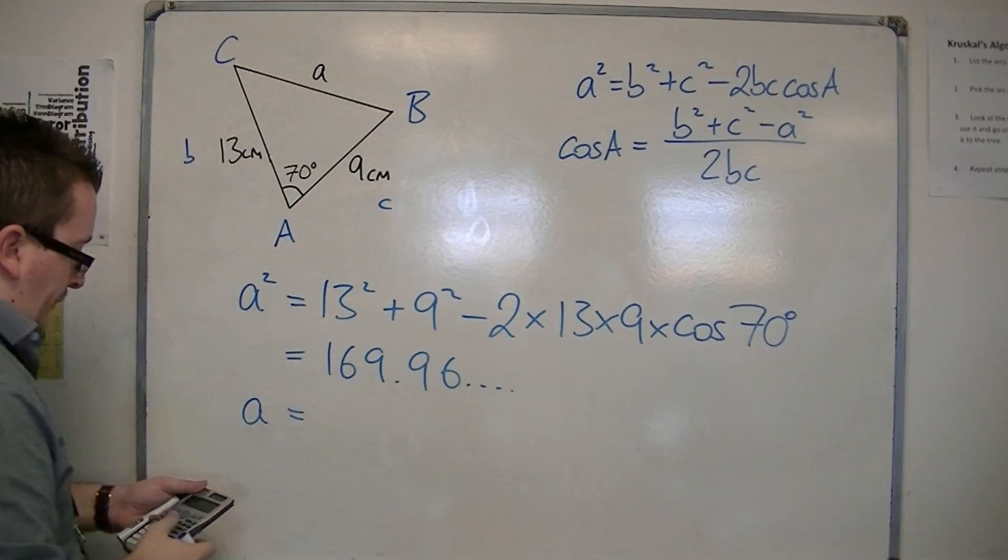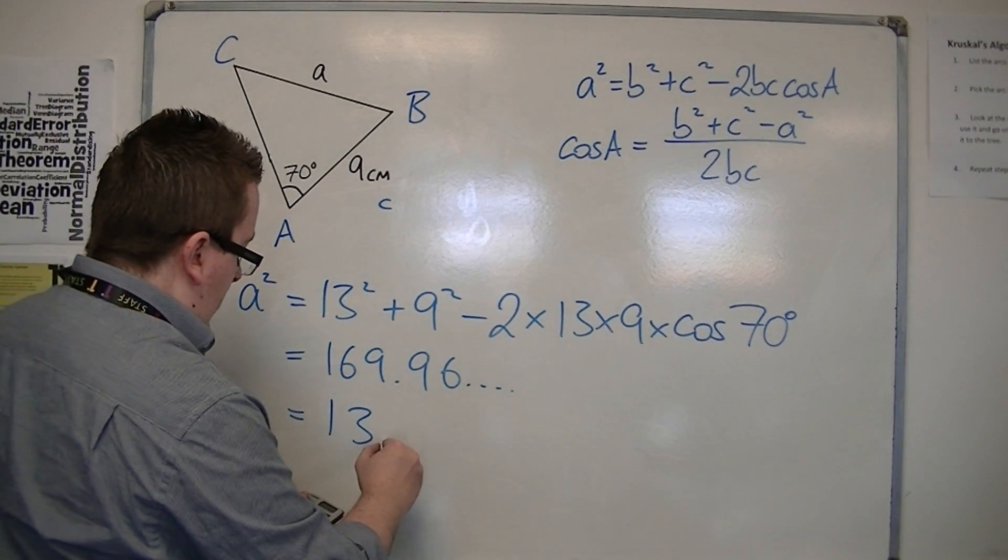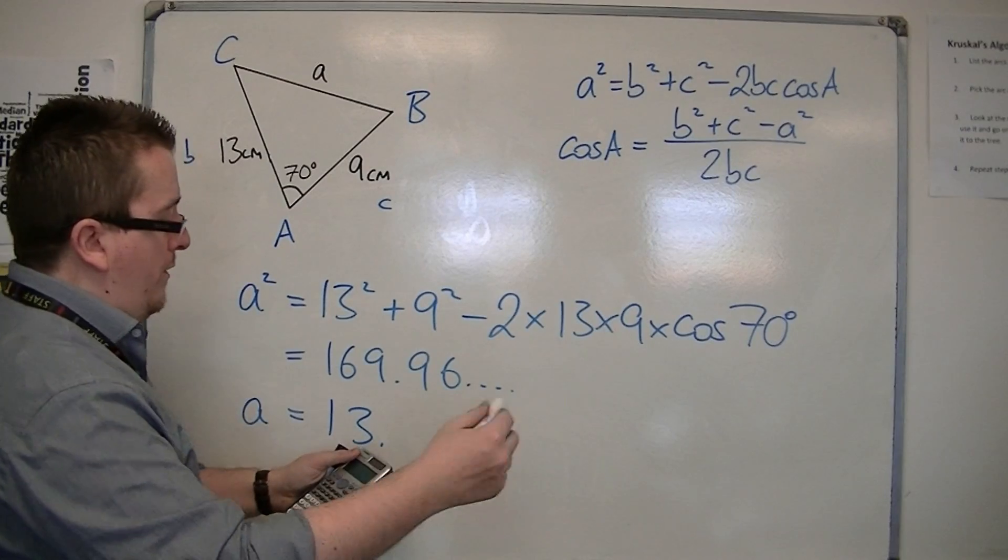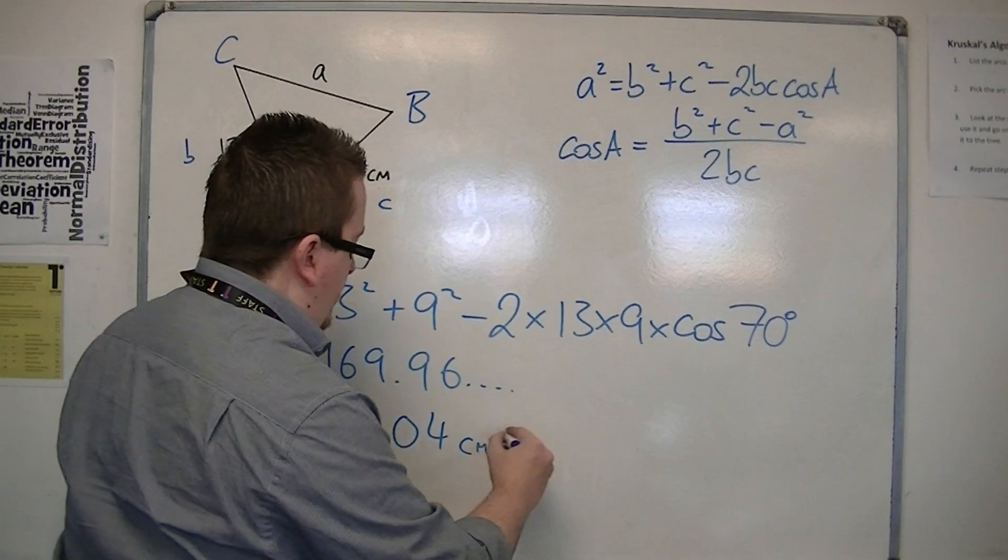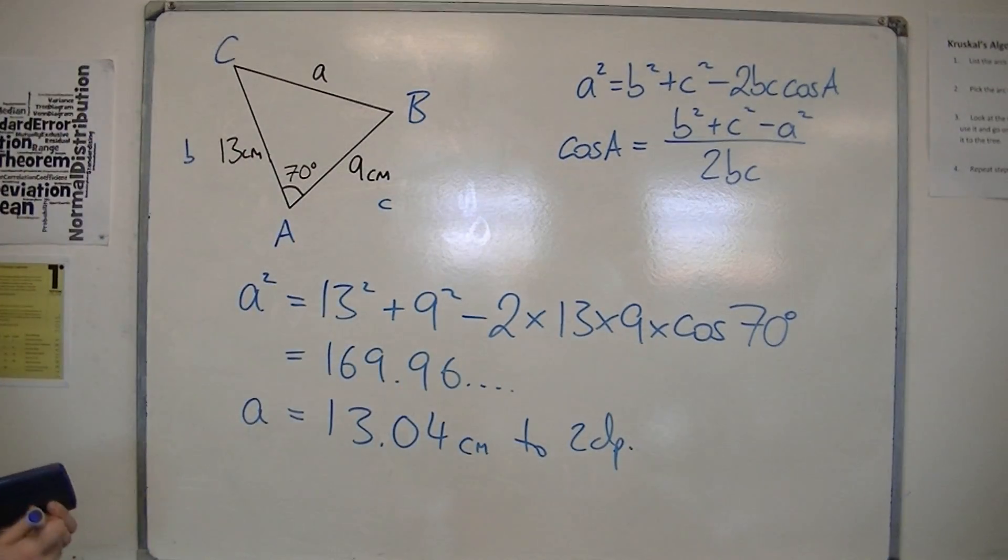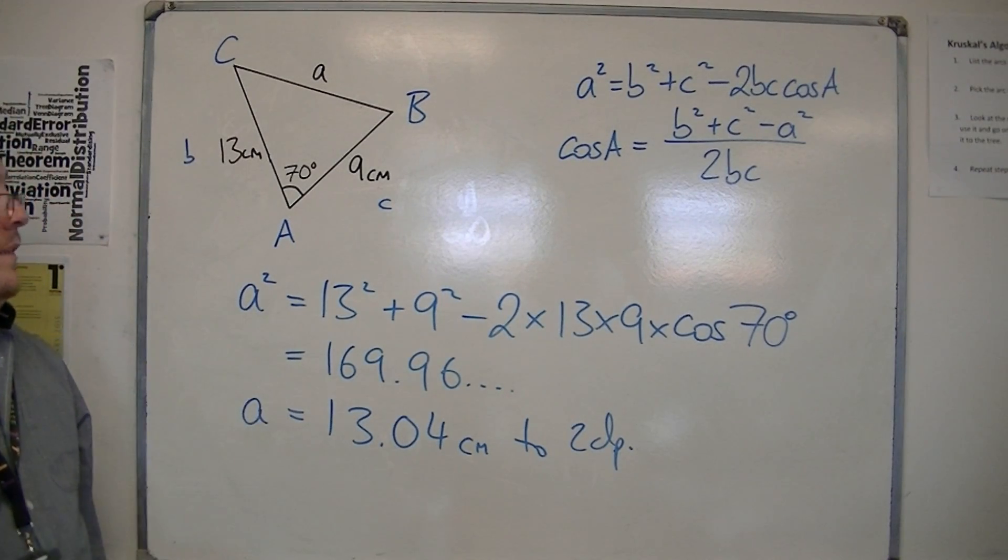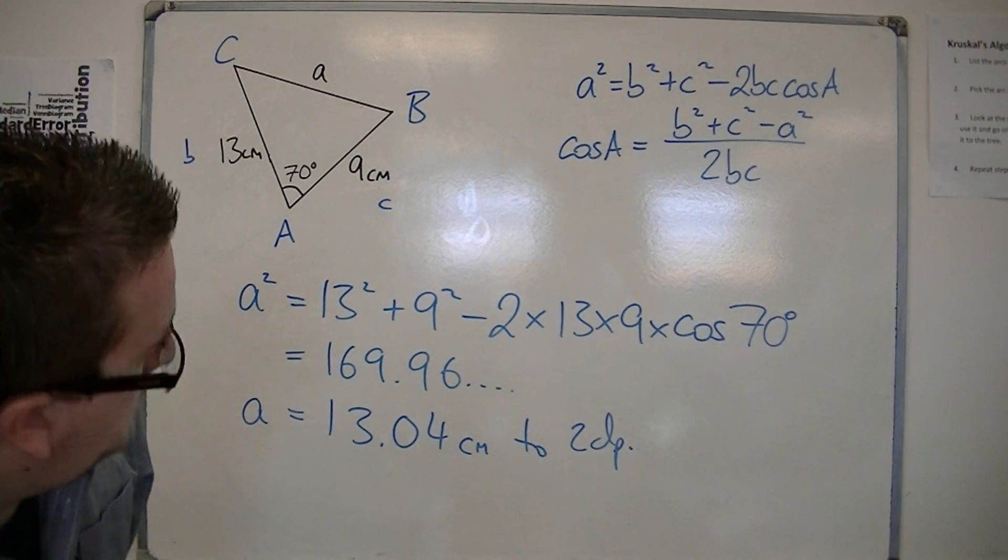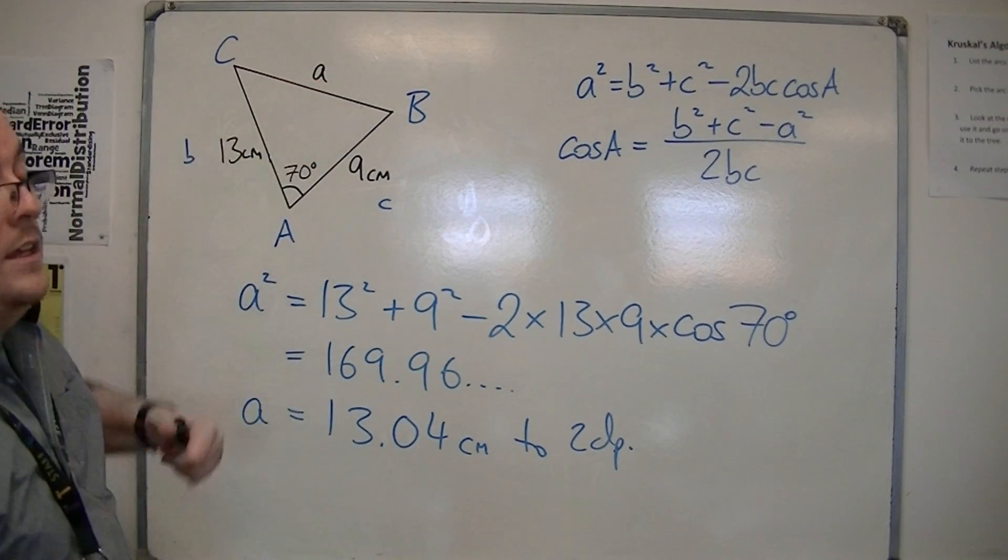Square root both sides. And we get A is 13.03715024, so 13.04 cm to 2 decimal places. So that is your measurement there. So that's how you can use the cosine rule to find the length of a missing side.